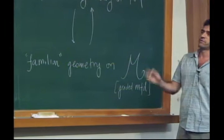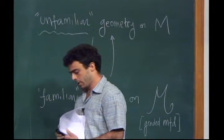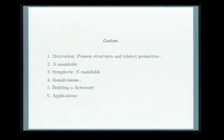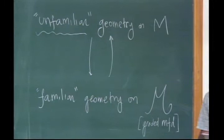The first 20 minutes of the talk will really be motivating and describing these unfamiliar geometrical structures. Here's a more orthodox outline: basically, I'll talk about Poisson structures and these related geometries — that will be the unfamiliar part. Then I'll talk about N-manifolds and symplectic N-manifolds and describe the unfamiliar spaces where the familiar geometry takes place.